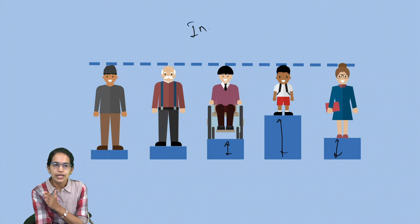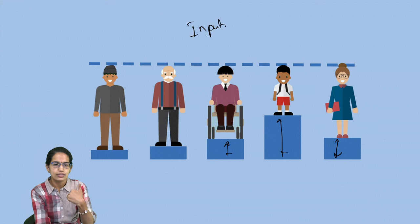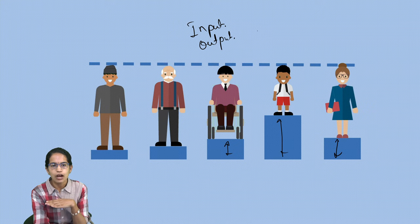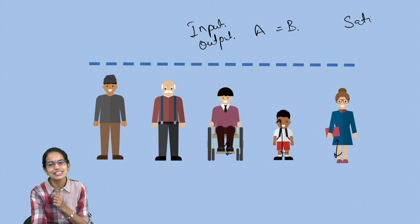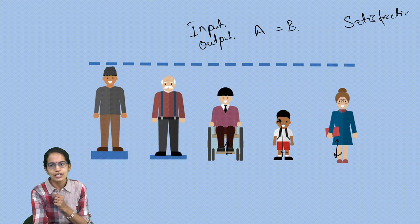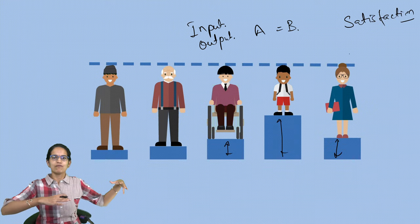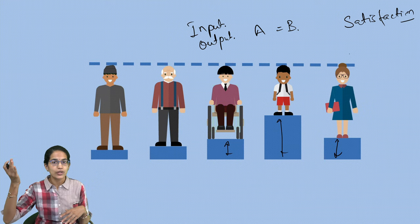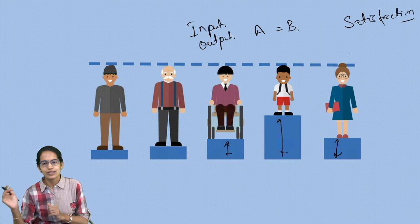When you are putting the inputs and getting the outputs in contrast to it, if the input and the output of A and B are equal, then there is definitely satisfaction. You would be very happy that whatever inputs I have put in, according to that, I got a job hike, I got a promotion, I got an increment. So there is satisfaction.